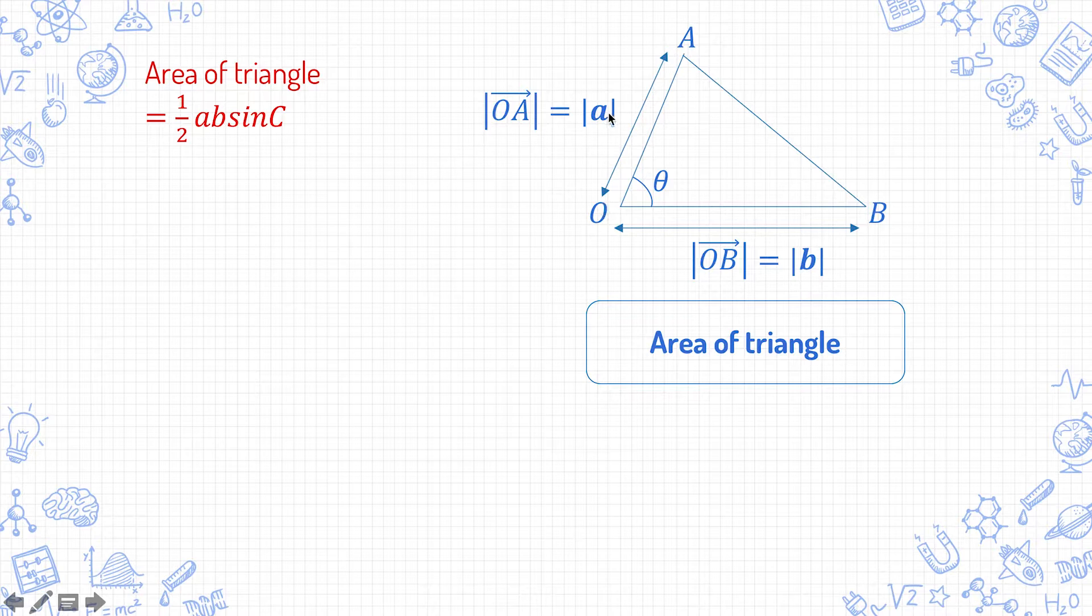If you apply that here, mod of OA or mod of a is the length of this side of the triangle, and mod b is the length of this side of the triangle, and this theta is the angle between the two sides. So applying this formula,